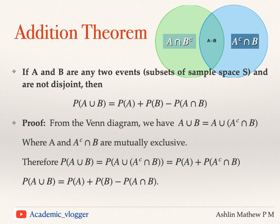When A and B were disjoint, we could directly write probability of A union B as probability of A plus probability of B. So this is the case where A and B are not disjoint — they have something in common.